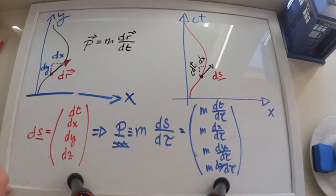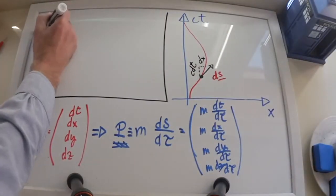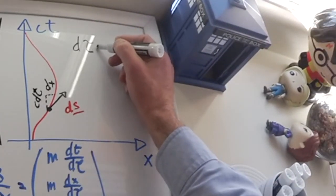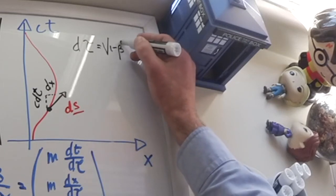Now, because we can relate the proper time interval with a time interval in a different reference frame, as d tau equals square root of 1 minus beta squared times dt, we can rewrite the components of the relativistic momentum.